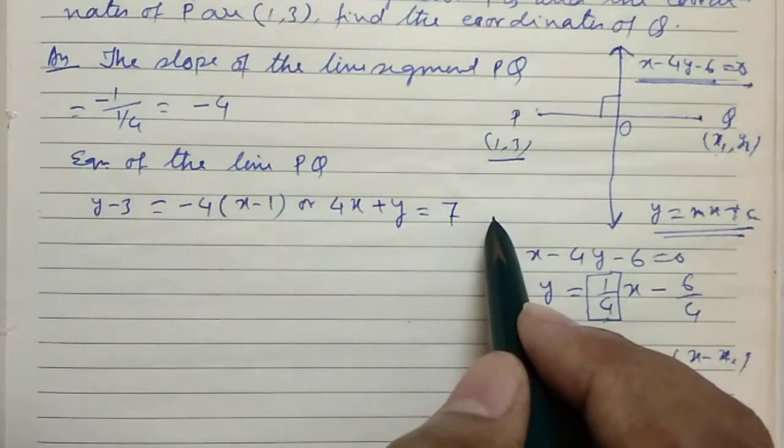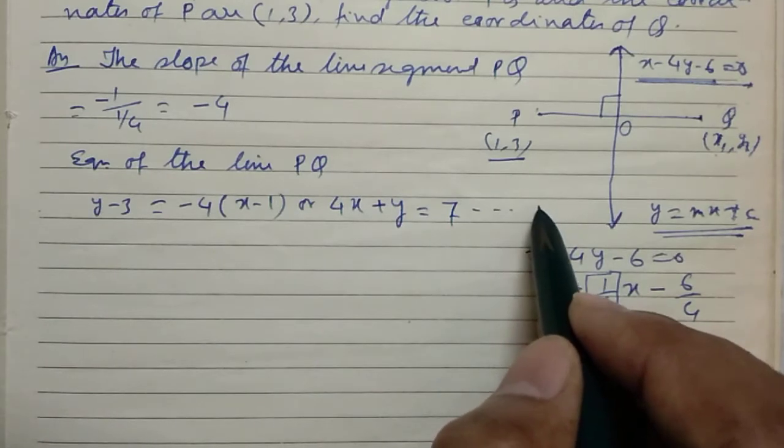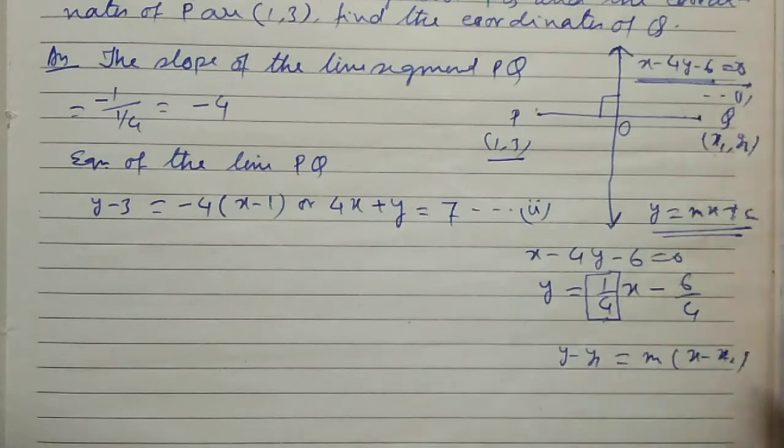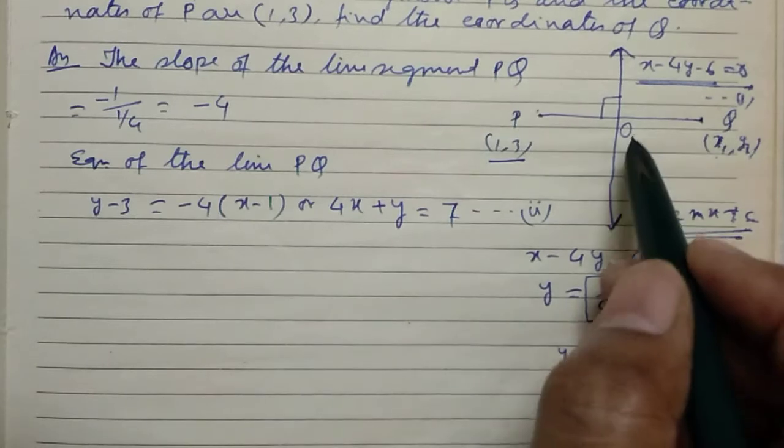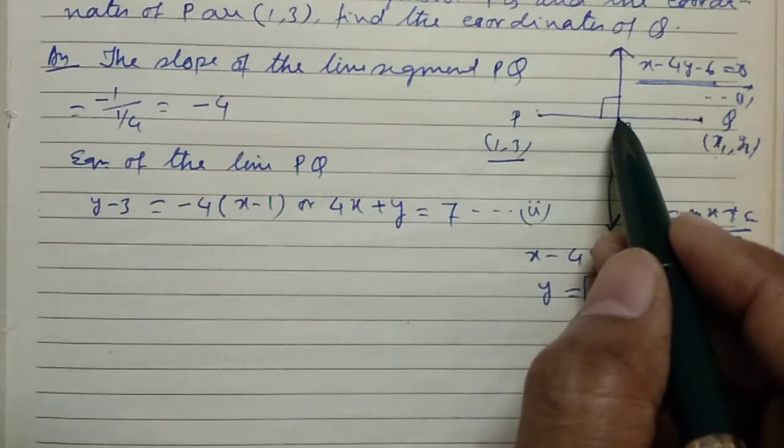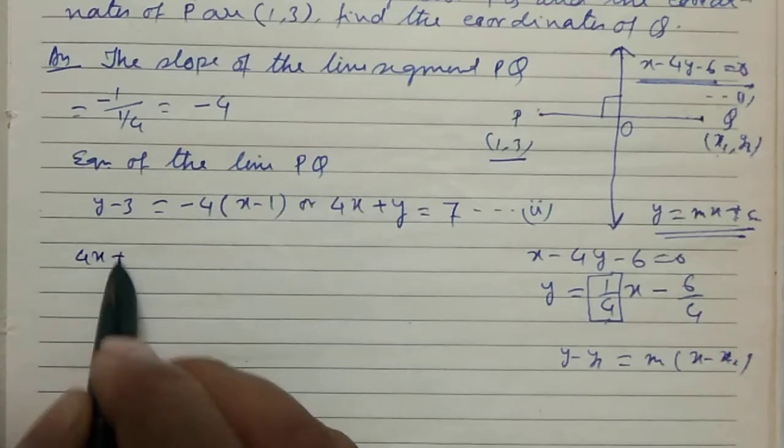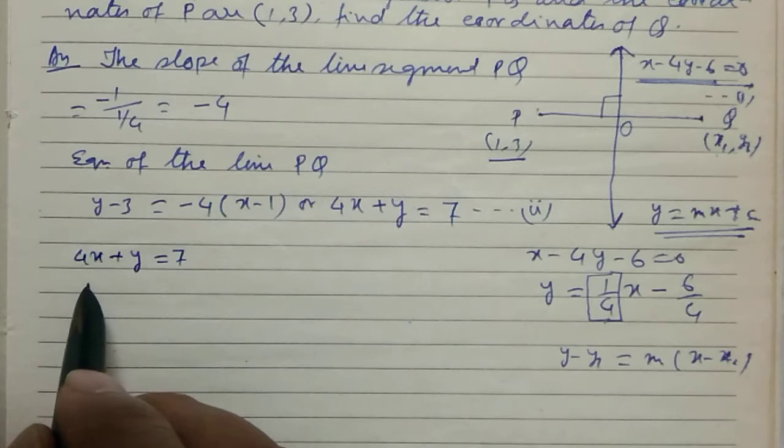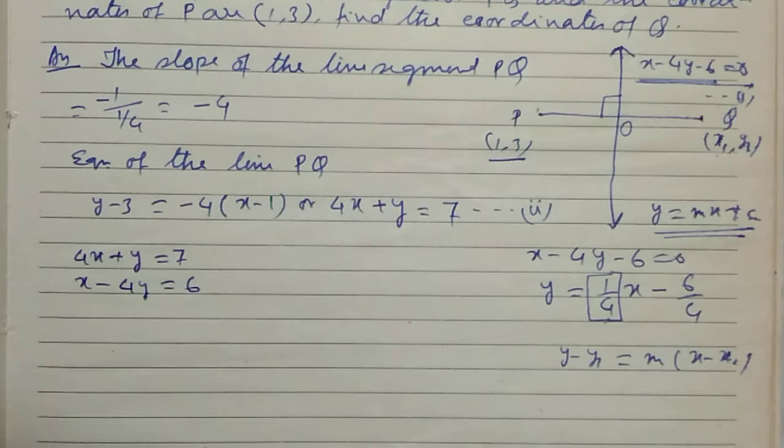7. We write this equation as 2 and this equation as 1. Now, we have to determine the coordinates of O, that is the point of intersection of 4x plus y equals 7 and x minus 4y equals 6.